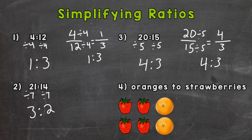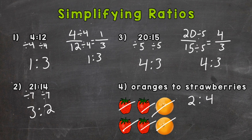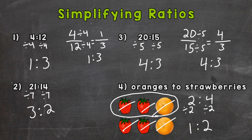Number 4, we're going from a picture — oranges to strawberries. So 2 oranges and 1, 2, 3, 4 strawberries. The greatest common factor between 2 and 4 is 2. So divide both of them by 2, and we get 1 to 2. For every 1 orange, there are 2 strawberries. And if we take a look, our picture will match — for every 1 orange, 2 strawberries; 1 orange, 2 strawberries.